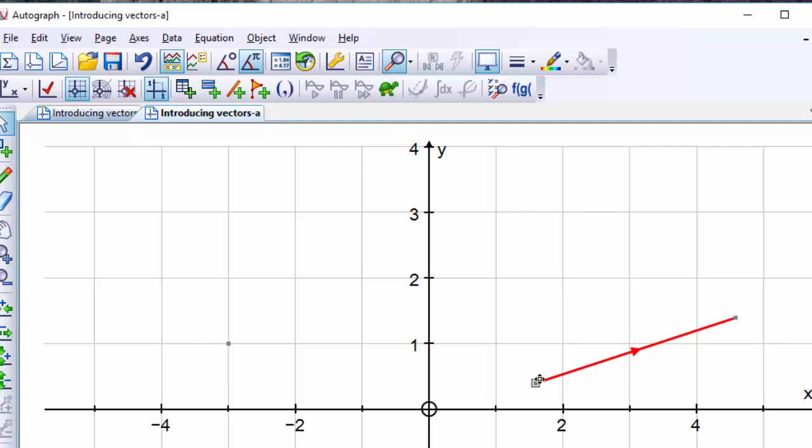Now the first thing to realize, of course, is this vector is exactly the same vector wherever you put this point. So although the point was necessary, it doesn't have to be in a particular position.